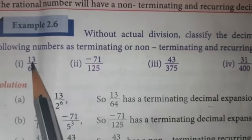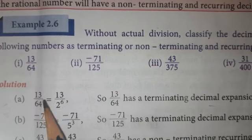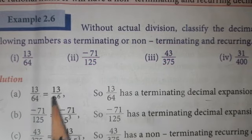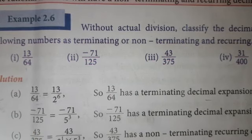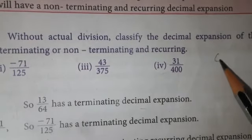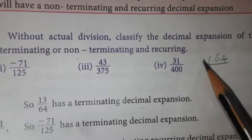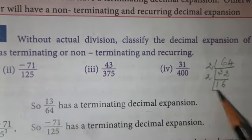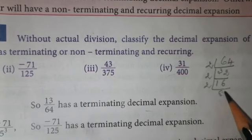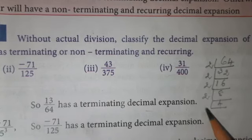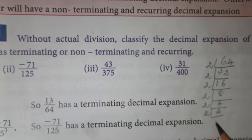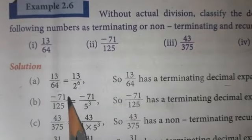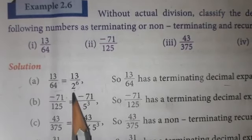Now, coming to the question: 13 divided by 64. In the numerator place, you write as it is. In the denominator, you should factorize 64. Factorizing in the 2 table: 64 → 32 → 16 → 8 → 4 → 2 → 1. How many 2s do you get? 1, 2, 3, 4, 5, 6. So that can be written as 2 power 6. 64 is 2 power 6.